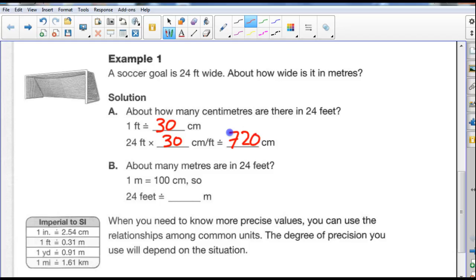About how many meters are in 24 feet? Well, 1 meter is 100 centimeters, so 24 feet is equal to approximately, well, we know there's 30 centimeters per foot, which is about 0.3 of a meter per foot. So, if I take 24 and I divide it by 3, that gives me approximately 8 meters. So, it's close, give or take.